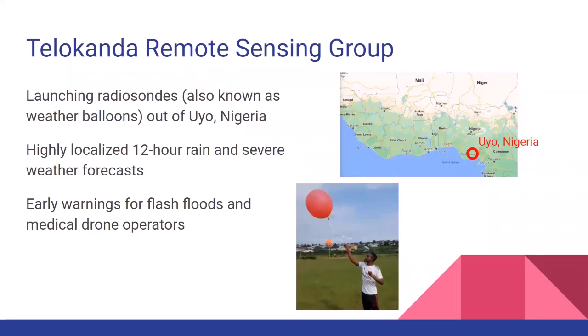My small company is called the Telecondo Remote Sensing Group. We launch radiosondes, also known as weather balloons, to make 12-hour forecasts. We launch them once a week out of Uyo, Nigeria. These kinds of forecasts warn populations about severe weather and flash floods.